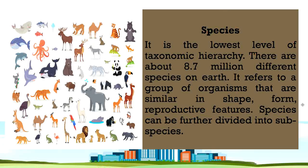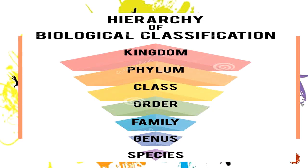Next is species. It is the lowest level of taxonomic hierarchy. There are about 8.7 million different species on Earth — it would take a lifetime to see all of those organisms because there are so many. Species refers to a group of organisms that are similar in shape, form, and reproductive features. Species can be further divided into subspecies. These are different kinds of species that we can observe.